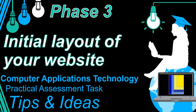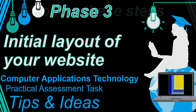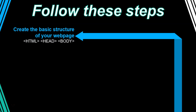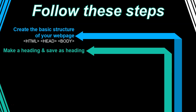So when we are designing our website or when you're doing your very first page, these are the steps I recommend. First, we're going to start off with creating a basic structure of your web page using HTML tags — the head tags, body tags, and title tags. Get your full structure done properly, then add a heading at the top and save that page. Our first page is going to be a home page, so we'll save it as 'home'.